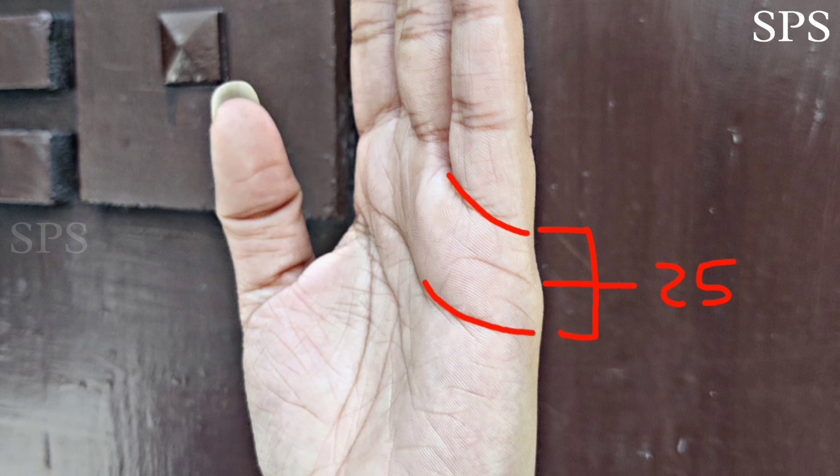But if the line presents above the half, it means your marriage will happen after the age of 25, or you can say around the age of 30.